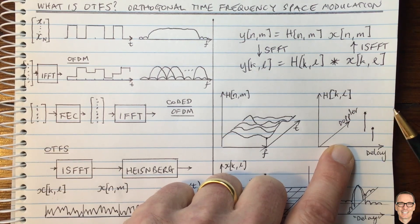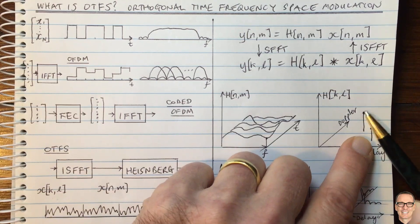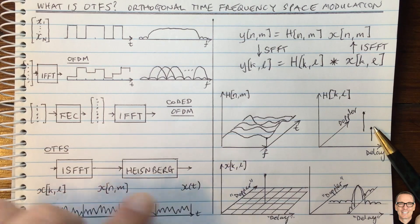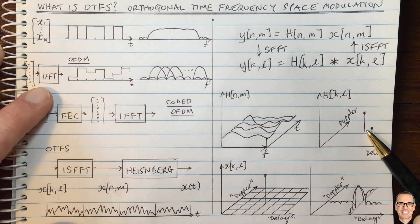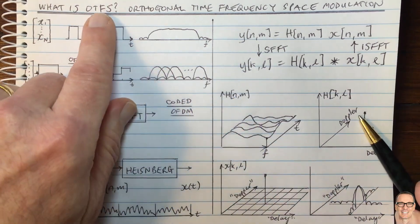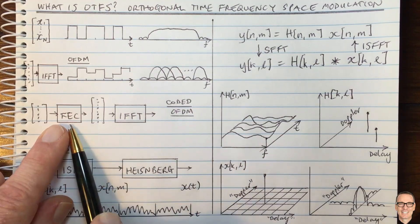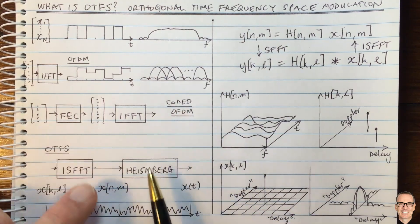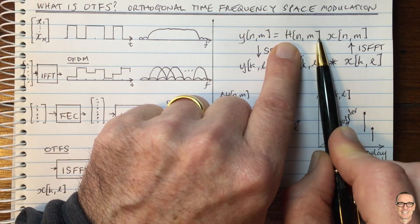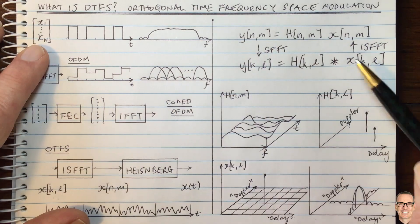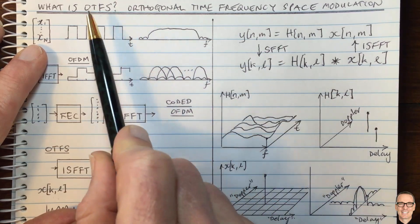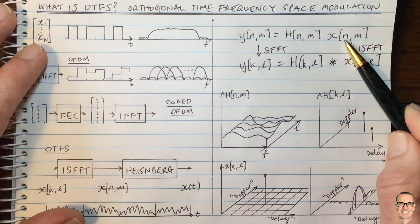There are still many practical aspects to work out: how to estimate the channel, what pilot sequences to use, and how to perform the equalization. It is not a clear-cut case that OTFS is definitely better than coded OFDM, because coded OFDM with interpolation, limited pilot symbols, and channel modeling can also be effective. This remains an active and exciting research topic with significant open practical challenges.